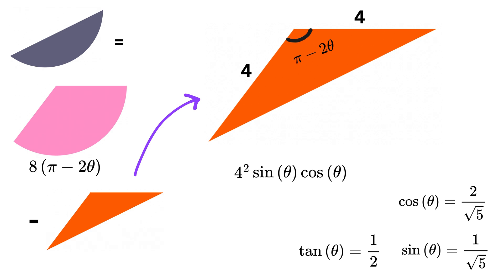So, the area will be 4 square times sin theta times cos theta. Substitute sin and cos from here to get 4 square times 1 upon root 5 times 2 upon root 5. This will give us 32 by 5, or 6.4.